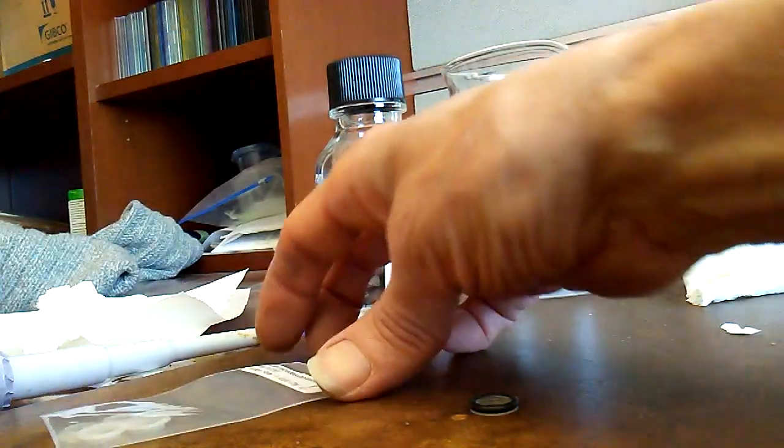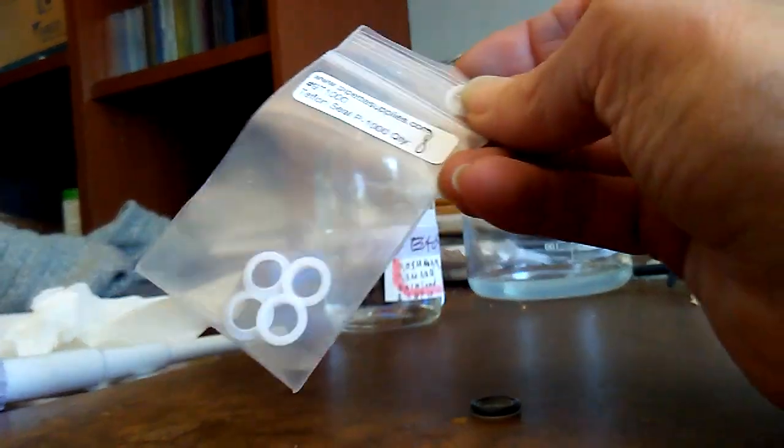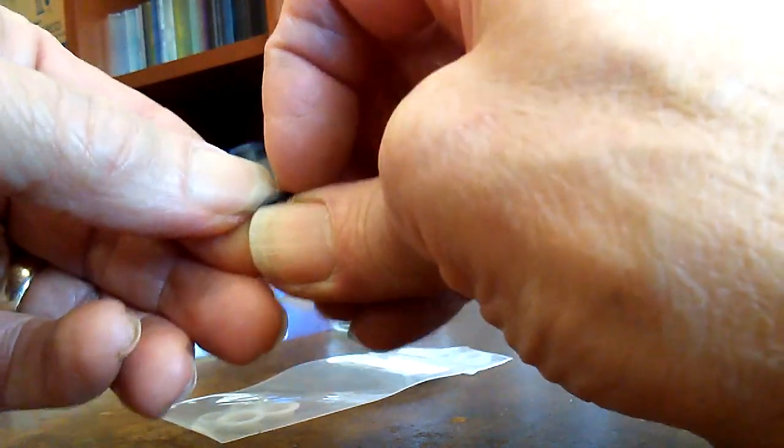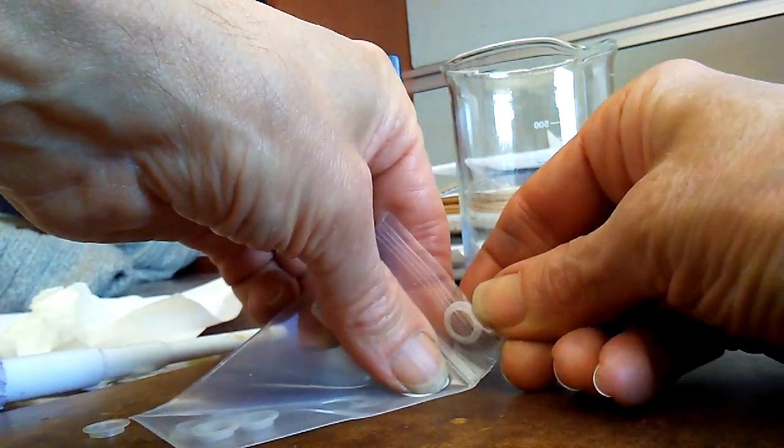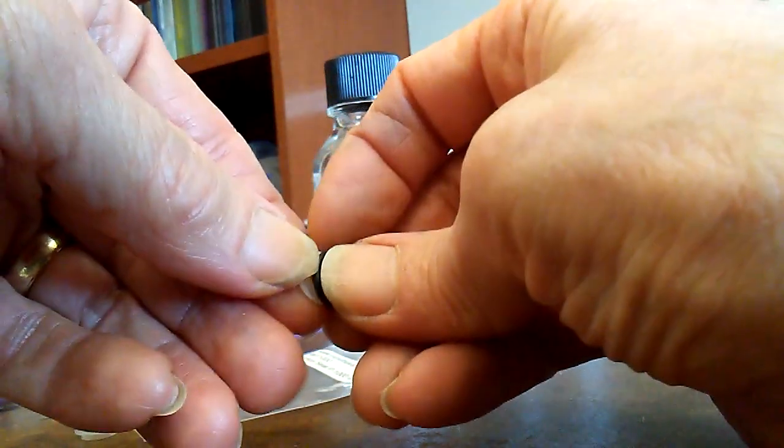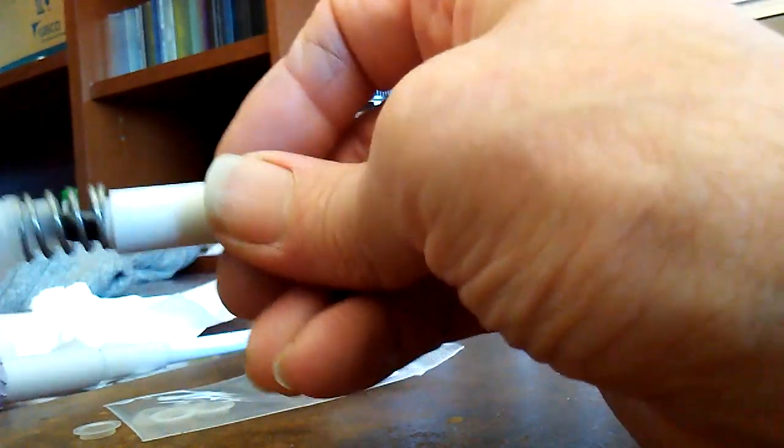Now the rusty piston has certainly scored this Teflon seal, so I want to replace that. I have some new seals here. And take it off the o-ring, put the new seal on. Put it back on the piston, and you always want the o-ring facing out. And put it back together.